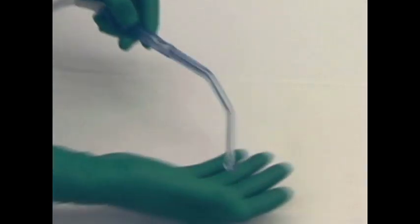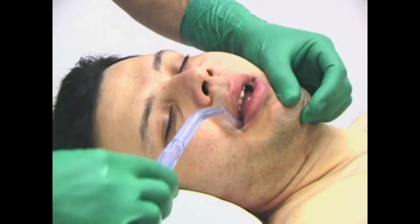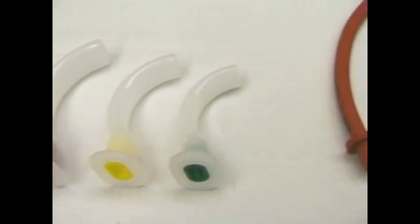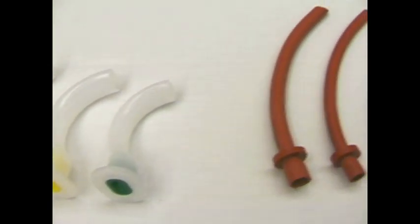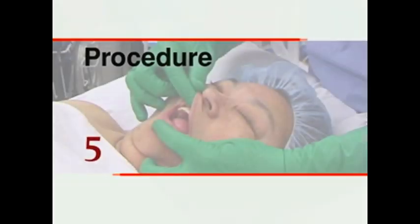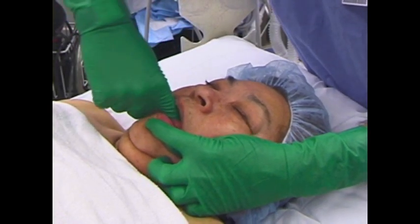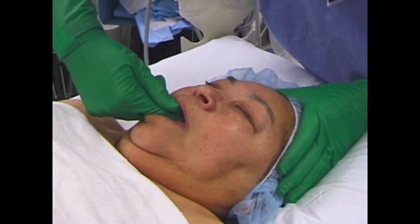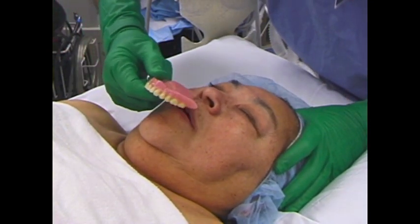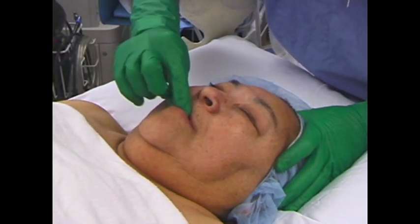Whenever possible during face mask ventilation, suction should be readily available. Airway management adjuncts such as oral or nasal airways may need to be used. Before beginning face mask ventilation, it is prudent to examine the patient's oral cavity when possible. Smaller dental prostheses or other foreign bodies can be swallowed or aspirated.